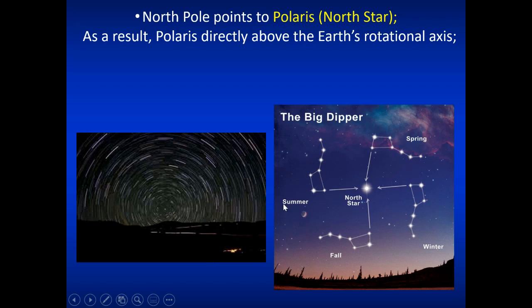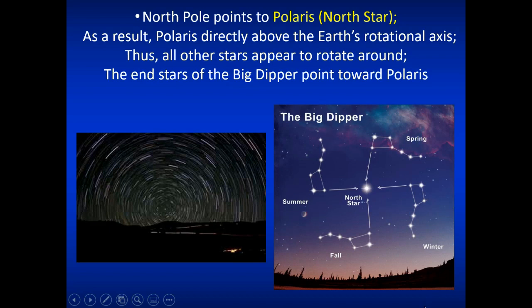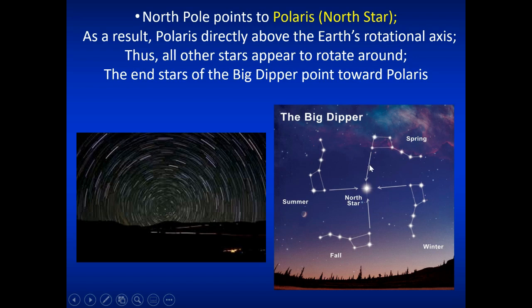Polaris is actually just a medium-bright star — it's not the brightest star in the sky — but it is the center of all motion for the stars because it's right above the North Pole. That's why they call it the North Star. If you walk towards Polaris, you're walking due north. The Big Dipper is always visible in the Northern Hemisphere because it's in the Northern Celestial Sphere. The two end stars of the Big Dipper always point towards Polaris, so if it's not cloudy and you can see the Big Dipper, you can find Polaris and know what direction you're going at night.